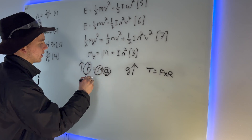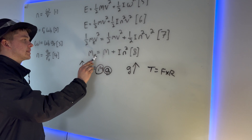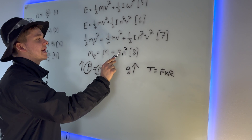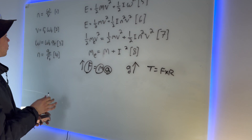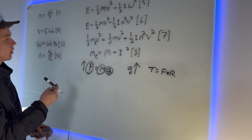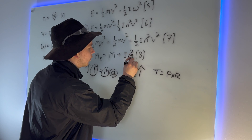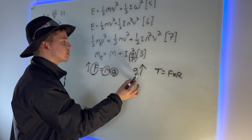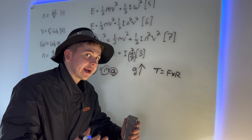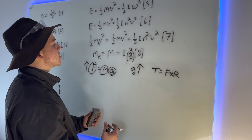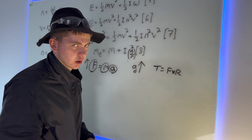But what about the mass part? Our equivalent linear mass is the gravitational mass plus I·n². And n is just the gear ratio over the rolling radius of the tire. So as the gear ratio increases, it gets squared — meaning the equivalent mass grows even bigger, bigger, bigger as gear ratio goes up.